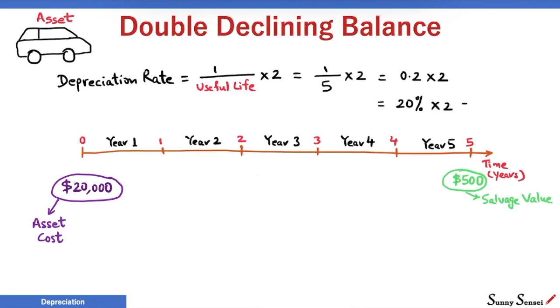Multiplying by 2 gives us a rate of 40%. The asset value is $20,000 at the start of year 1. The value drops by 40% or $8,000 in year 1. We are left with $12,000 at the end of year 1.